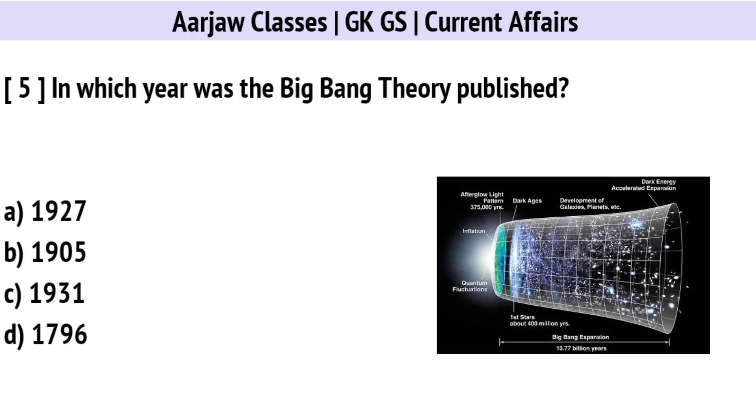In which year was the Big Bang Theory published? The right option is C: In 1931.